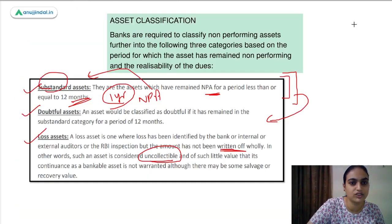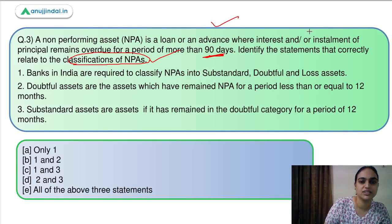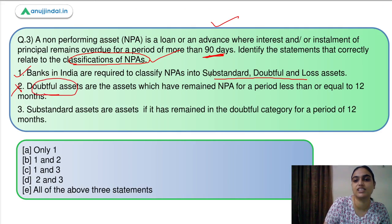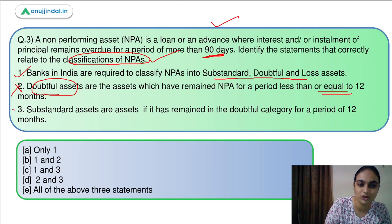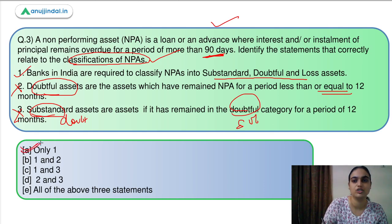Coming back to the NPA classification question, we have to identify the correct statements. The first statement is correct — banks have to classify NPAs into the three categories. The second is incorrect because it's substandard assets that are in the NPA category for up to one year. The third is also incorrect because it's the doubtful assets that remain in the substandard category for 12 months. So the first is correct — the answer is option A.